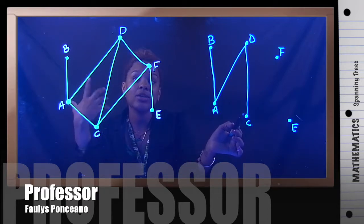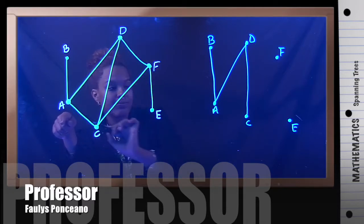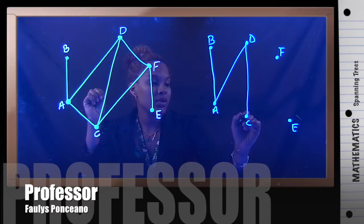then I have a circuit. I don't want to have a circuit. So I have to get rid of this line right here. So A to C, this edge is gone. So now I'm here.